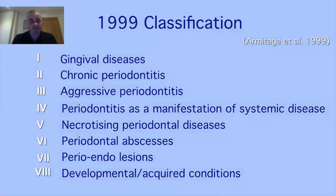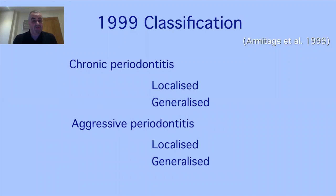Before getting into the new classification, it's worth looking at the old one briefly. With the old classification, it did what it said on the tin — it's been around for nearly 20 years. One of the big things most of us liked was the two different disease categories: chronic and aggressive periodontitis, both of which could be either localized or generalized.